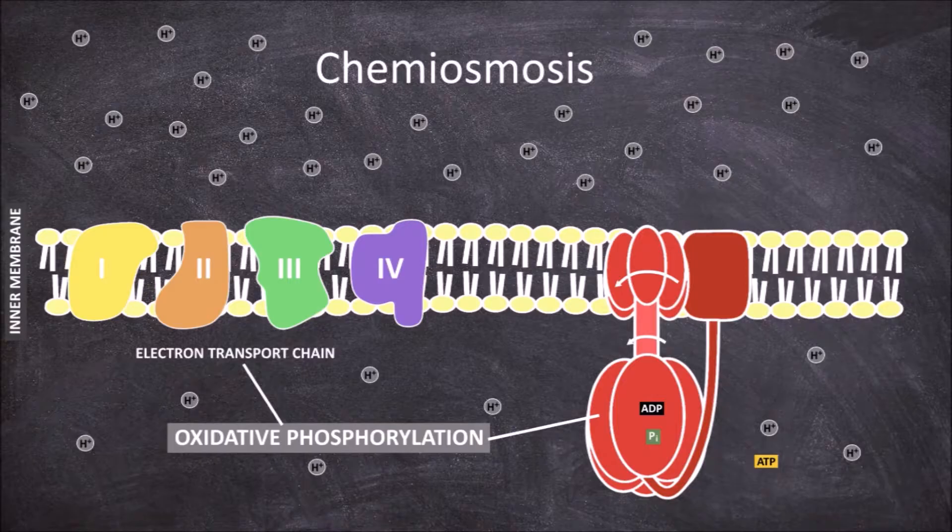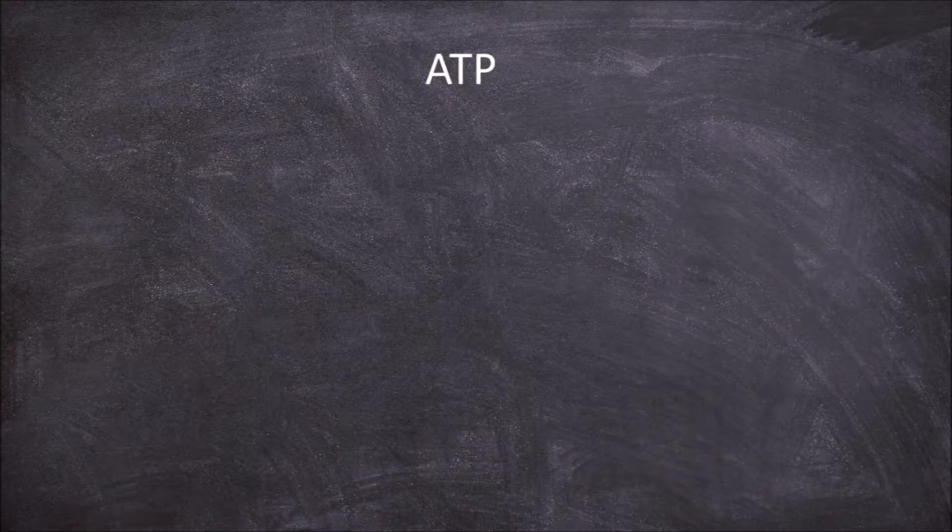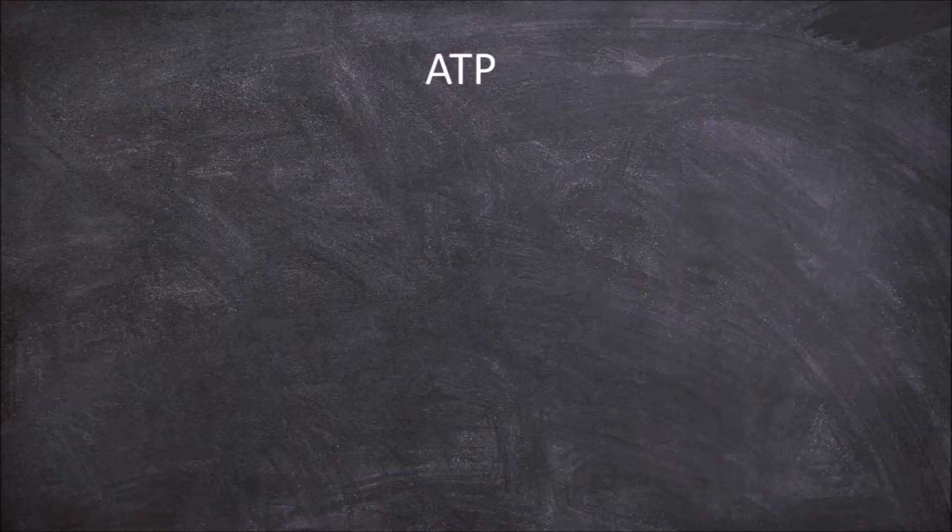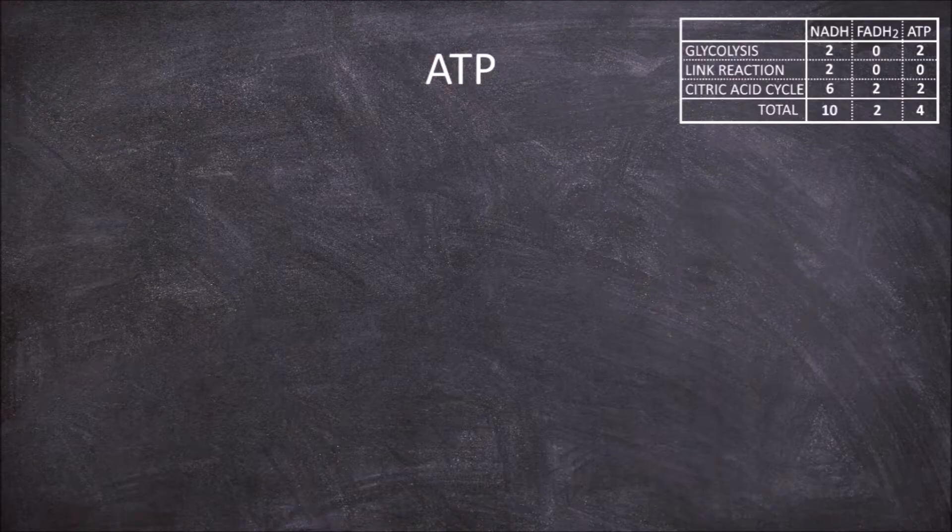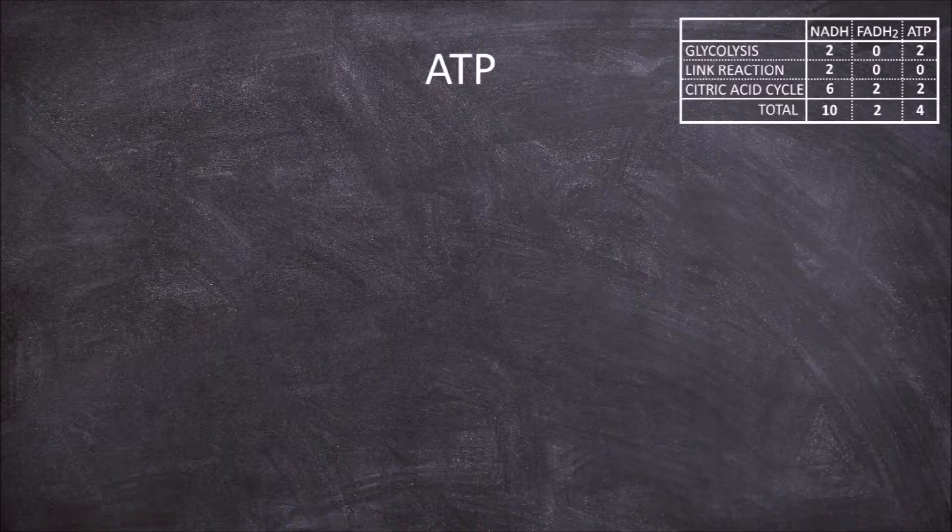Now that we have ATP being produced, what we really want to know is how much ATP is produced in aerobic respiration for each molecule of glucose that initially enters glycolysis. During aerobic respiration we get 2 ATP directly from glycolysis, 2 from the citric acid cycle.